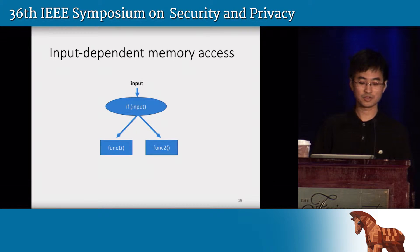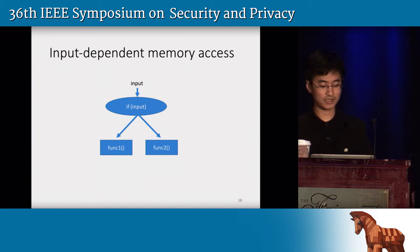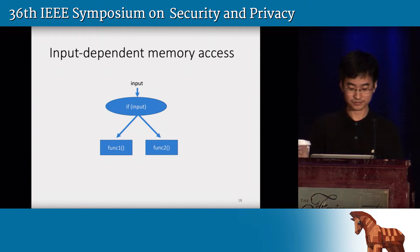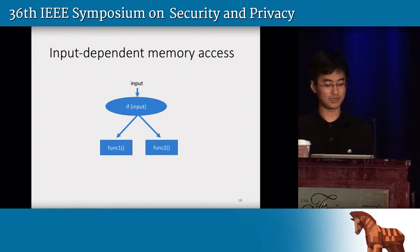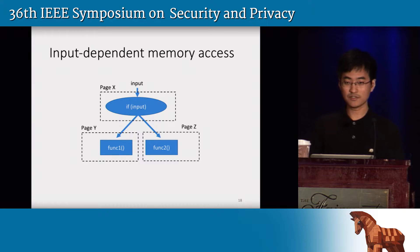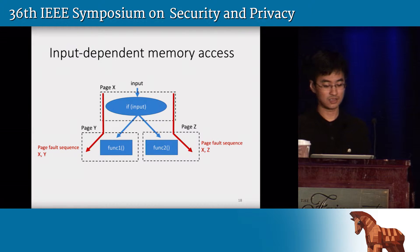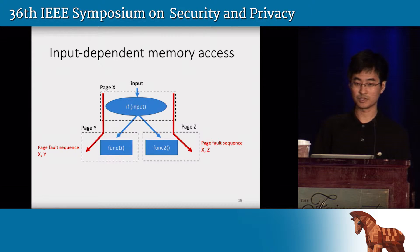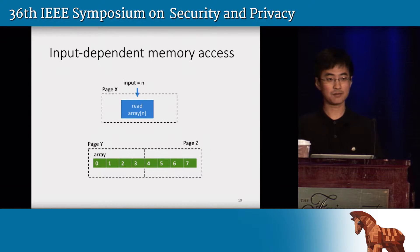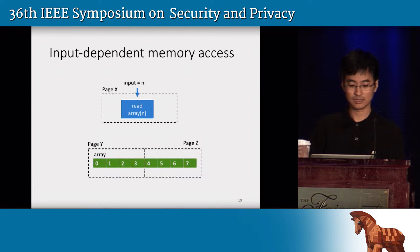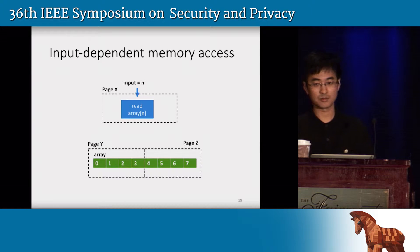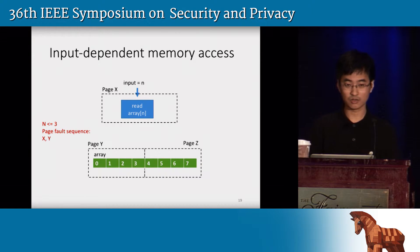The basic idea is to use input-dependent memory accesses. For example, if the application code contains a branch where the input is a branch condition, and if different branches are located in different memory pages, then we will observe different page fault sequences when different branches are taken. So based on the page fault sequence, we can tell whether the input is true or false. Another example is when the application reads one element from a big array where the index is the input — if the array spans across different memory pages, then based on page faults, we can tell a range about this input.